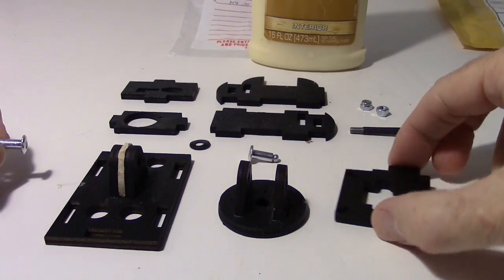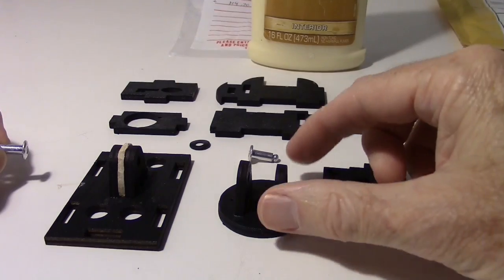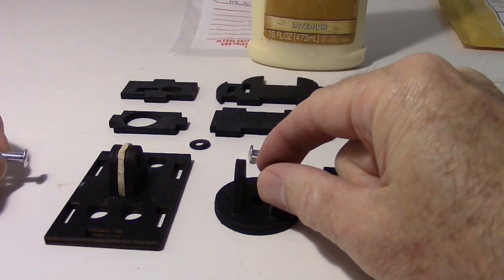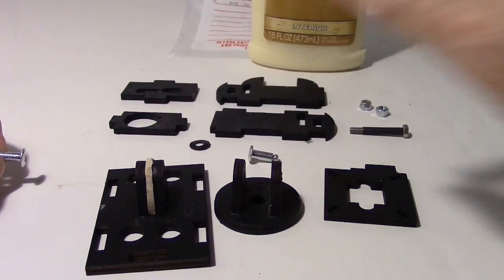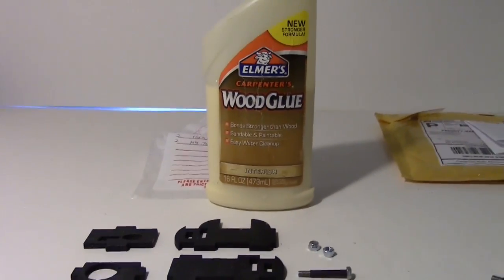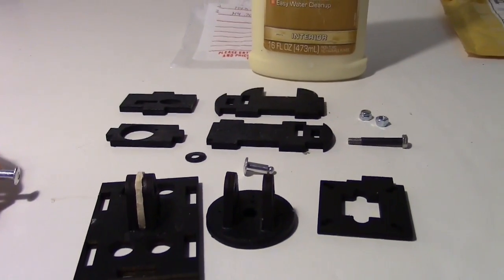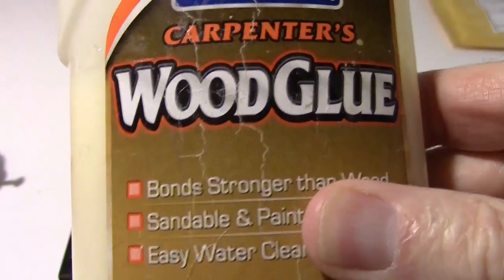So the pieces are all dry now. The black paint is dry. And I've started the assembly. I've already glued the pieces to the base here and also to the tray for the camera. And I've used just some of this Elmer's Carpenter's Wood Glue. Nothing fancy, but it's really strong. So I don't think I'll have any problem with it.